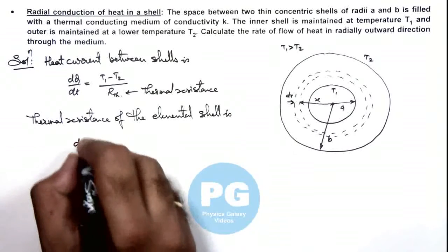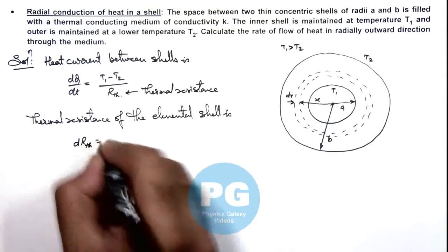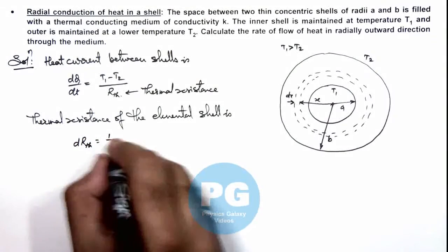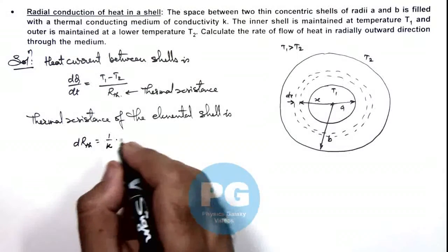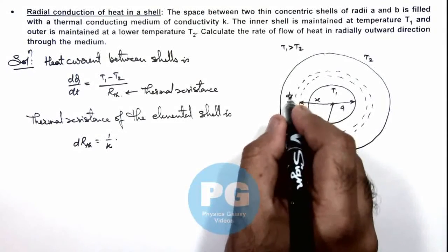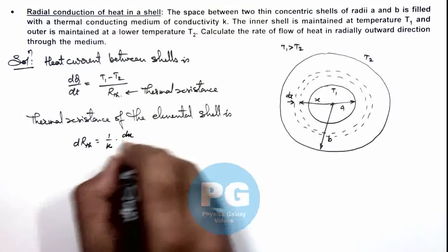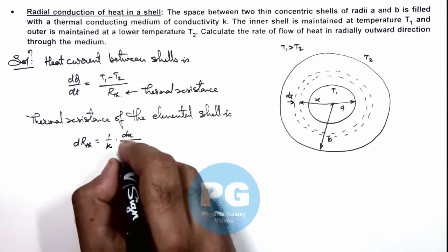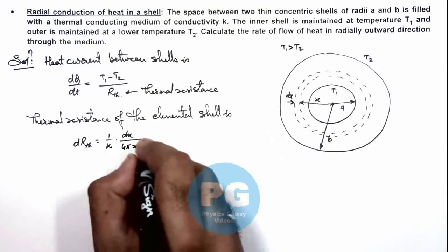This we can write as dR_thermal, that is equal to 1/k multiplied by the width through which the heat will be conducted, which is dx, divided by the cross-sectional area through which heat is flowing, which is 4πx².